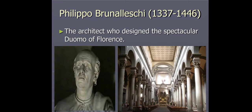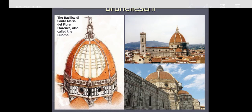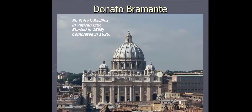Next, we discuss Filippo Brunelleschi, a very famous architect. He was born in 1337 and died in 1446. He was the architect who designed the spectacular Duomo of Florence — the Basilica di Santa Maria del Fiore, also called the Duomo. The Duomo was where parliament was held. Donato Bramante designed another landmark — St. Peter's Basilica in Vatican City, started in 1506 and completed in 1626, taking almost 100 years.